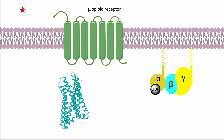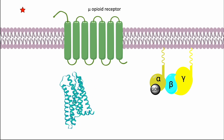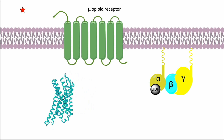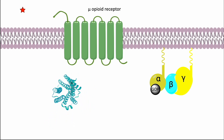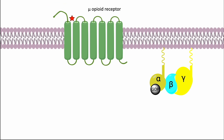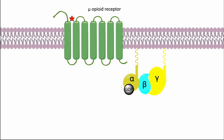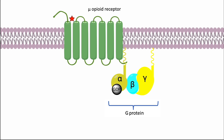GPCRs are seven transmembrane receptors. The receptor protein is embedded within the membrane, with the binding site for the chemical messenger exposed on the outer surface. On the inner surface, there is another binding site, which is normally closed. When a chemical messenger binds to its binding site, the receptor protein undergoes a conformational change. This change of shape opens up the binding site on the inner surface, which is then recognized by a specific G-protein.